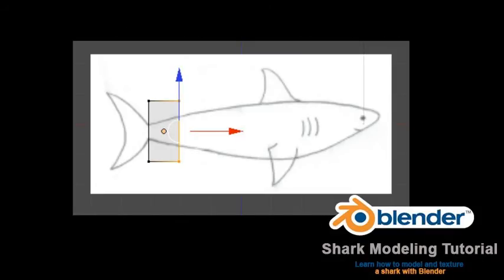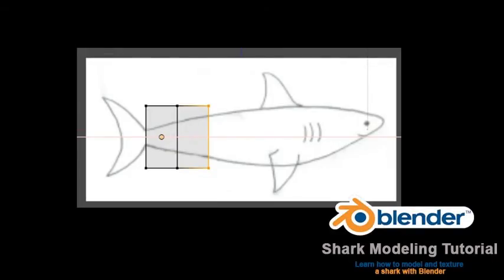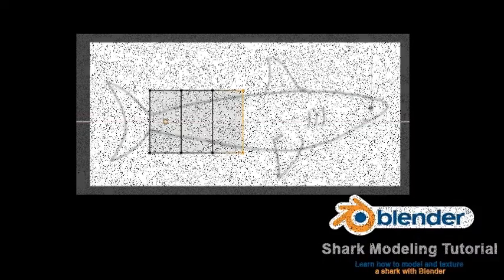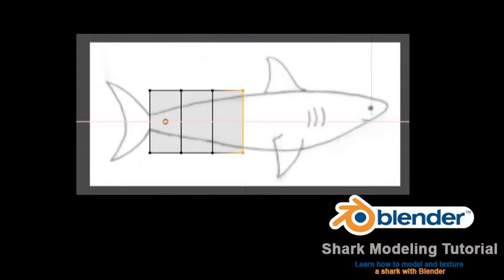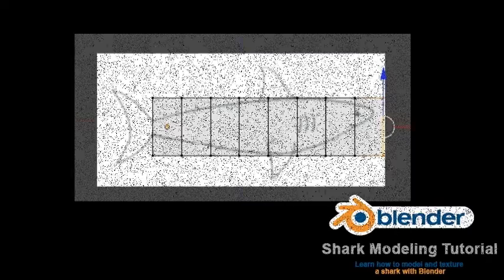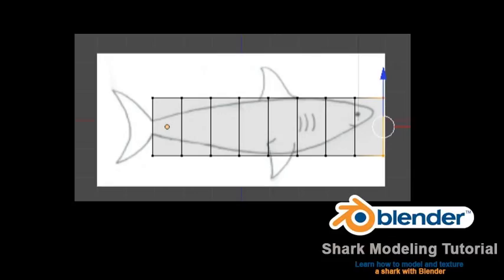Tab to edit mode. Press the A key to deselect the vertices. Press the B key for box select and select the row of vertices on the right. Press the E key to extrude, followed by the X key, followed by 1, then left click to set. This will extrude the shark object 1 Blender unit to the right along the X axis. Press E, X, and 1 again and left click to set — this will extrude the vertices 1 Blender unit to the right again. Repeat this process until you have 8 segments of extrusion as shown.